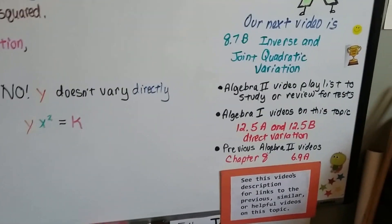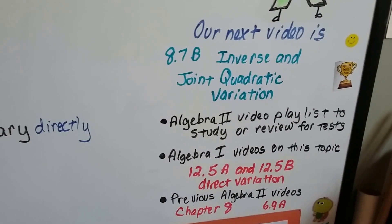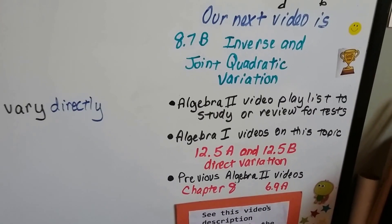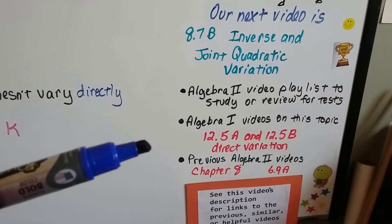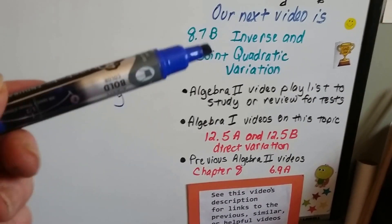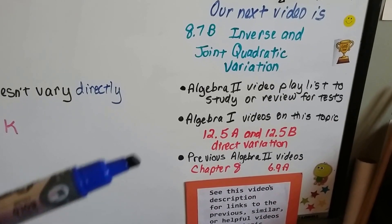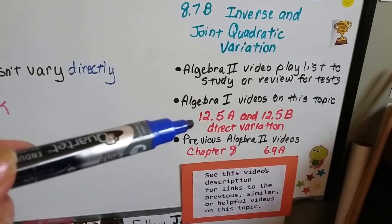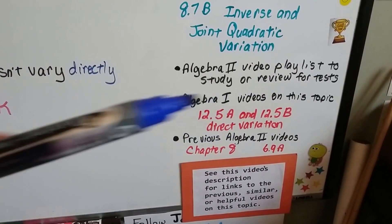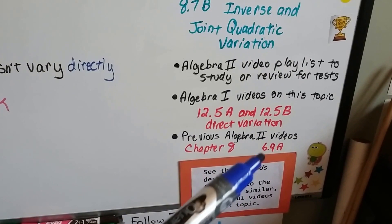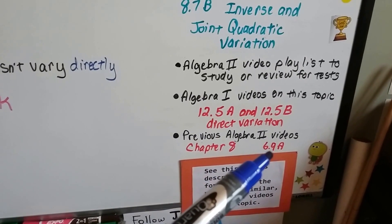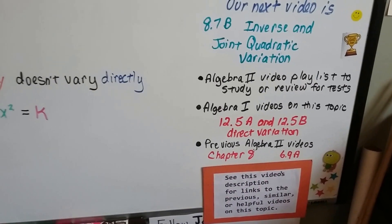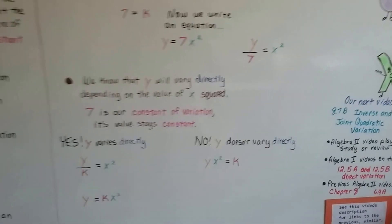Our next video is 8.7b, and we're going to talk about inverse and joint quadratic variation. We talked about inverse and joint variation last year, and we talked about it a little bit this year, too. So we're going to talk about quadratic variation. I'm going to add this video to the Algebra 2 playlist. If you want to see about direct variation from Algebra 1, there'll be links to 12.5a and b where we actually solve some problems. And the direct variation video from this playlist, 6.9a, will be there, so it'll be easier for you to find. And all those previous videos for Chapter 8 that we just did, those 11 previous videos.